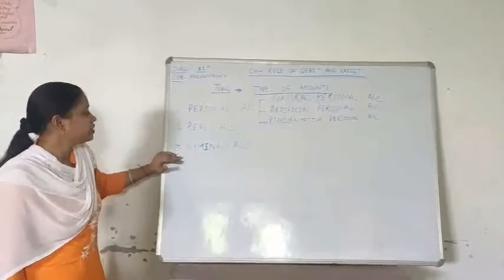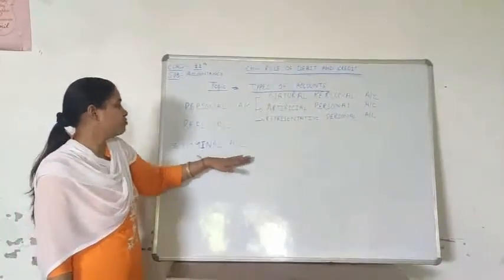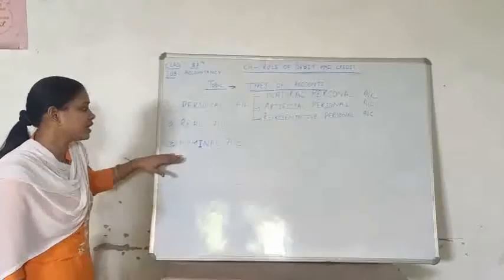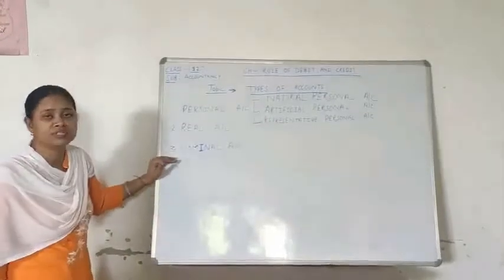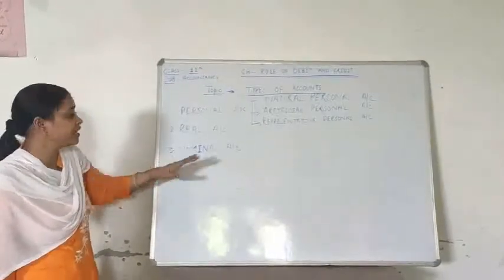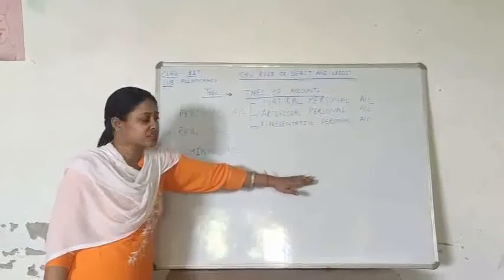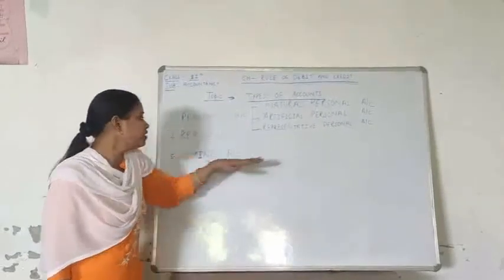The third is nominal account. Nominal account is the account which is related to the expenses and losses of the firm.